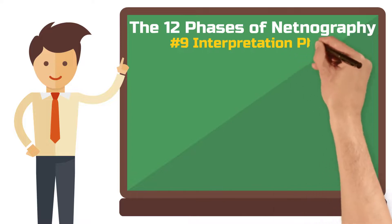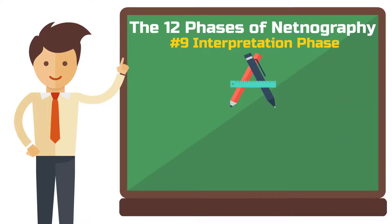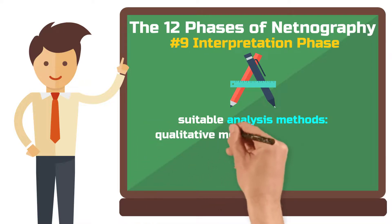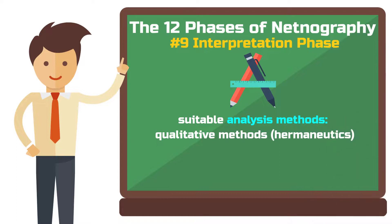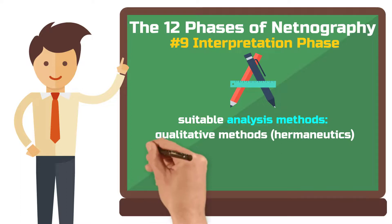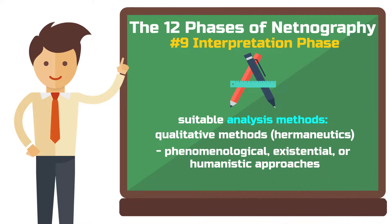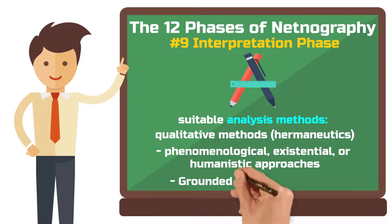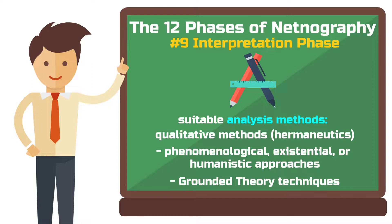Phase 9: The interpretation phase. You are free to choose your analysis method, but remember that netnography is a methodology — you still have to choose the methods you want to use for data analysis within this research approach. Qualitative methods that stand for an interpretivist approach are suitable, including all methods that operate on the principle of hermeneutics. Phenomenological, existential, or humanistic approaches are also compatible with netnography. A very typical analysis method that aligns well with netnography are techniques from grounded theory.